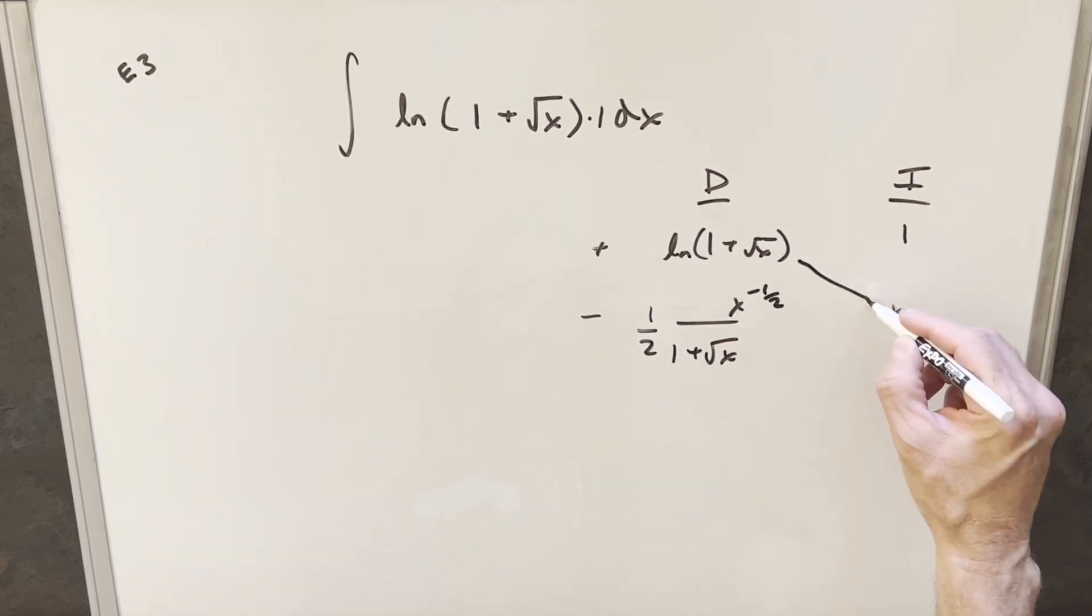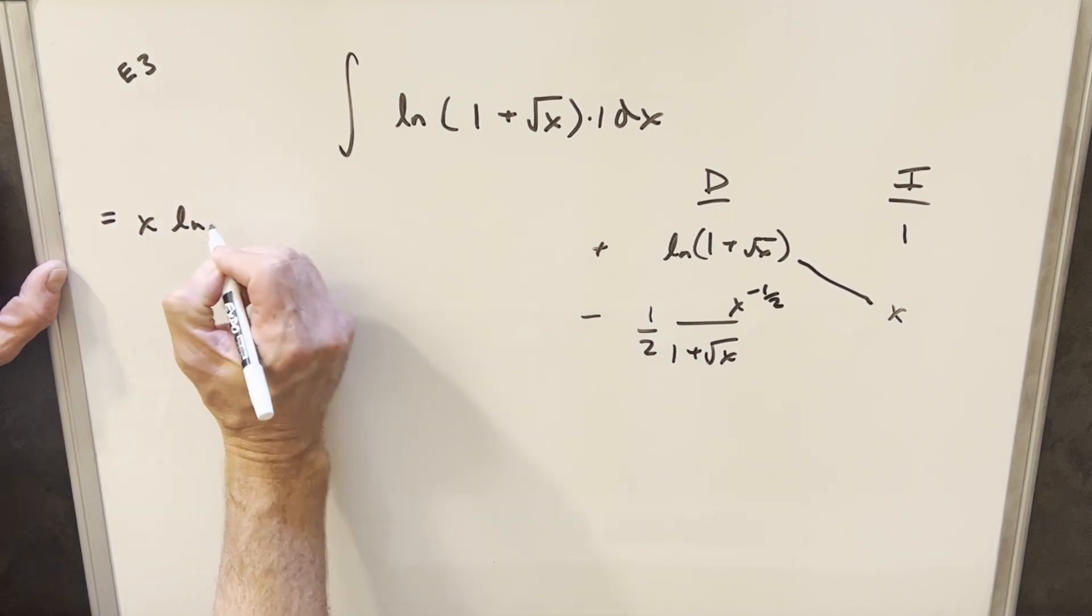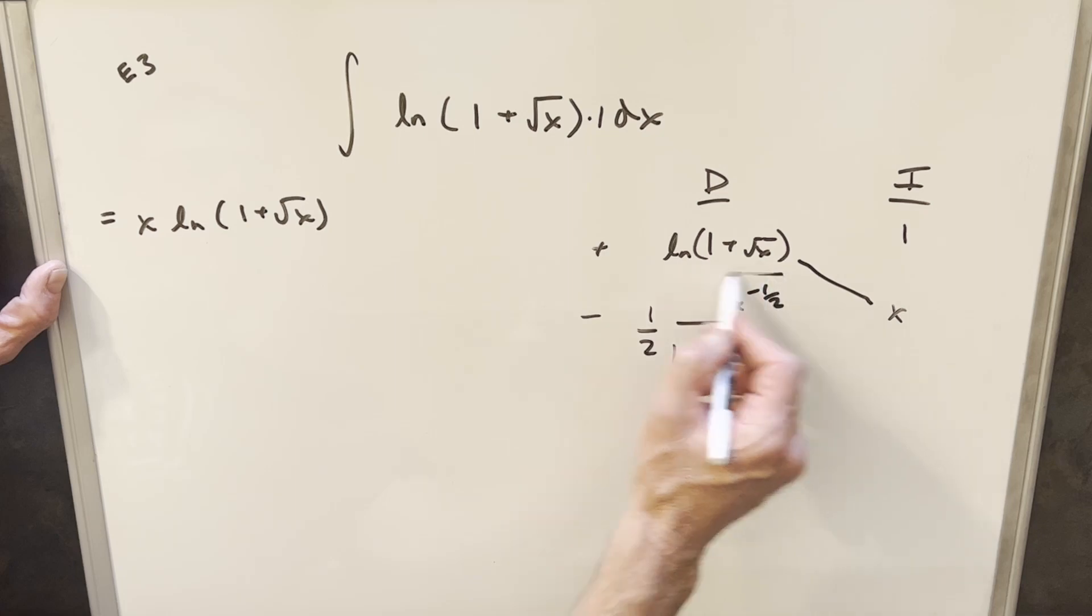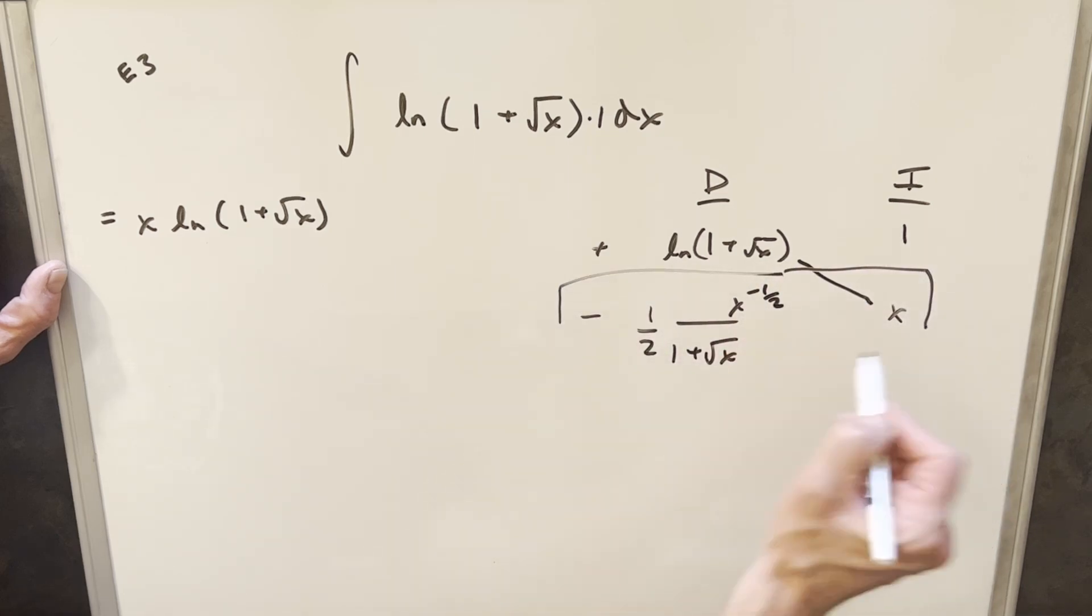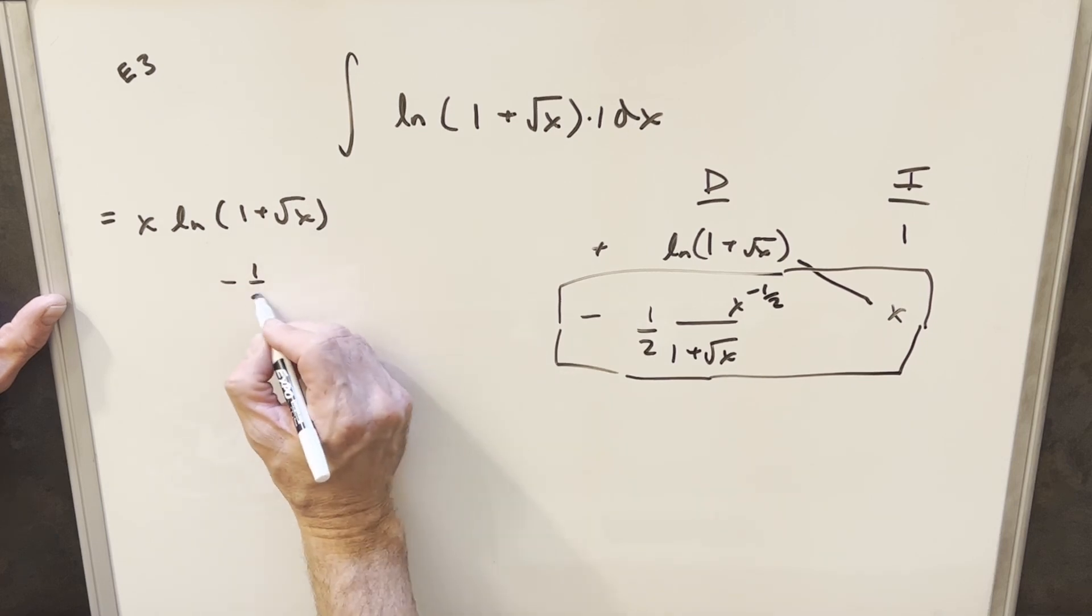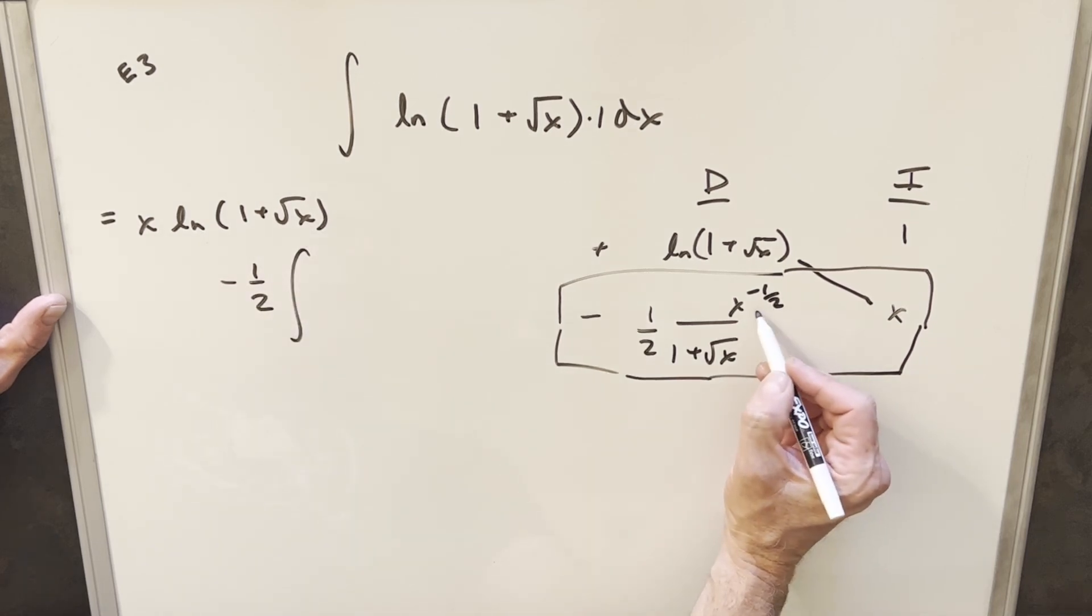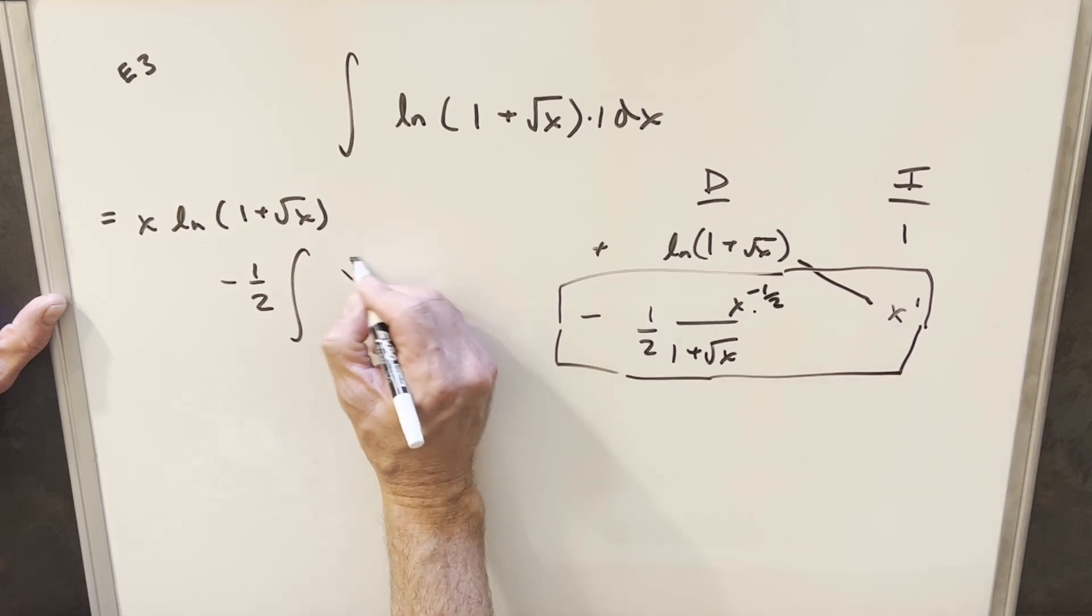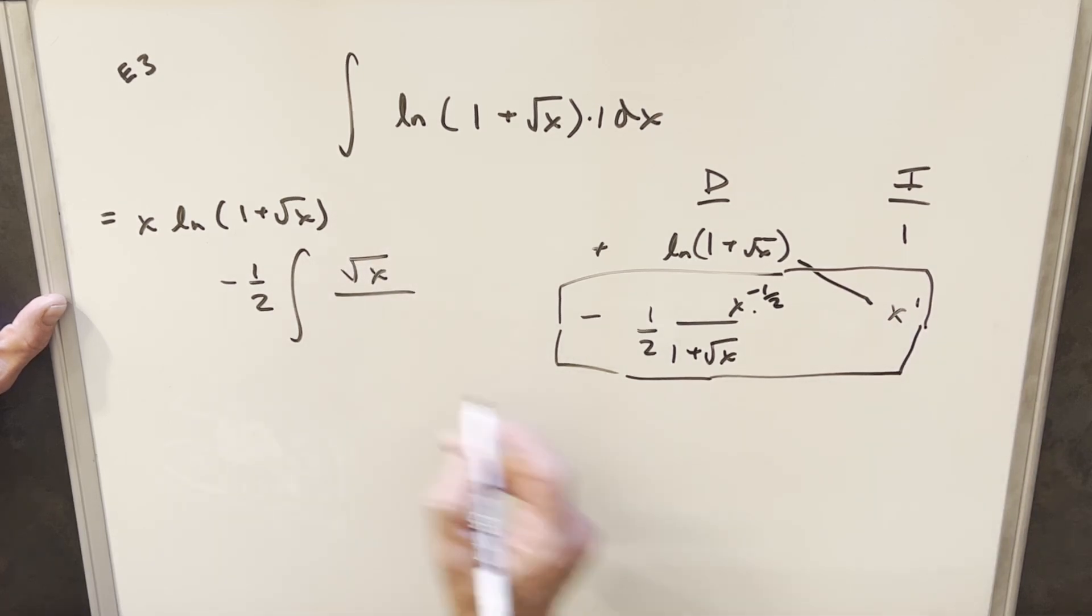So we're going to have part of our solution right here, so we'll just write that down. We're going to have x ln one plus square root of x. And then here, this whole part here is going to be an integral. And so for this integral here, we'll have our one half out front and then what I'll do is we're going to multiply this x minus half times just x and that's going to give me a square root of x in the numerator. And then the denominator will just have this one plus square root of x dx.